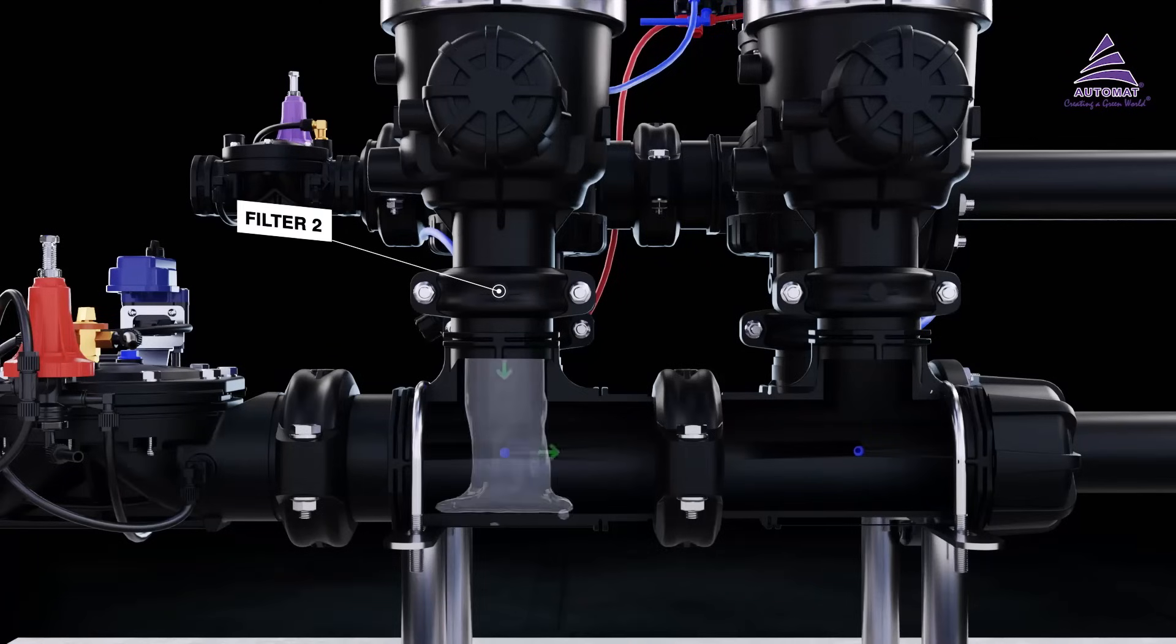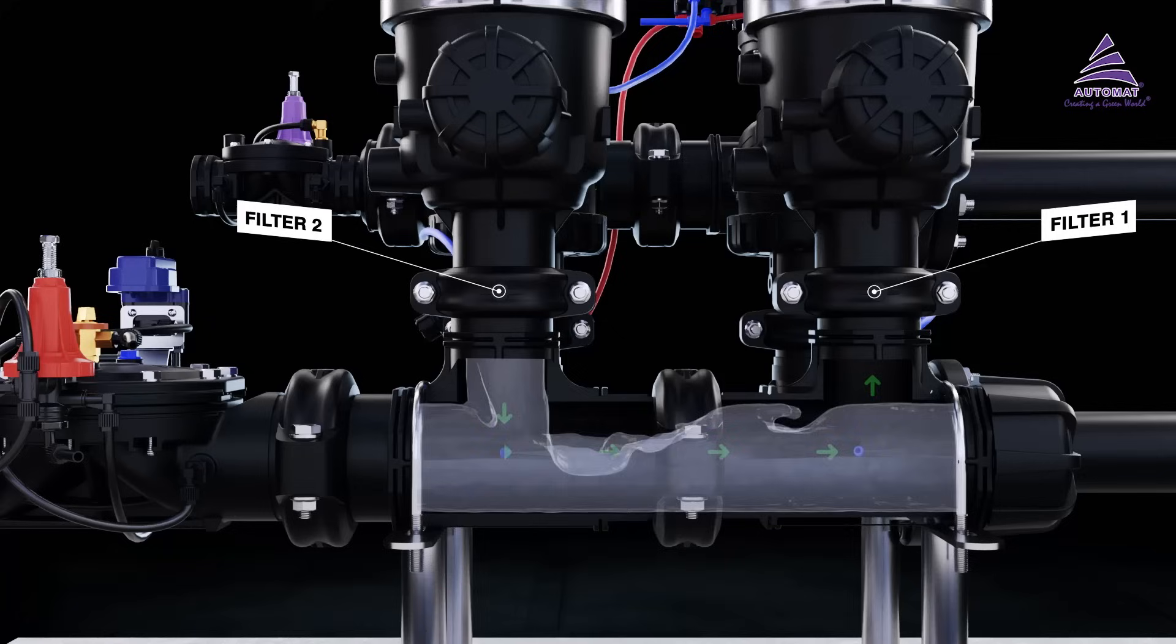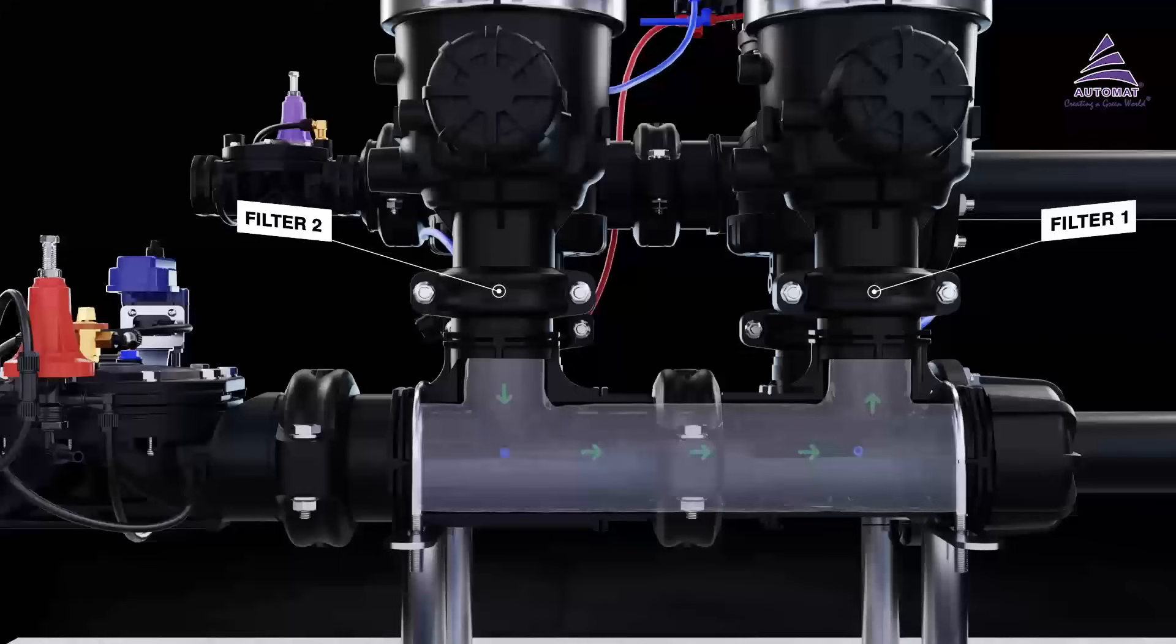Firstly, the inlet valve port of filter one closes and the drain port opens. Clean water coming from filter two passes through the outlet port of filter one in reverse direction into the disk housing, causing the filter disks to decompress. Water coming from the multi-jet tangential nozzles spray water on the loose disks, causing them to separate from each other and spin freely in the disk housing.